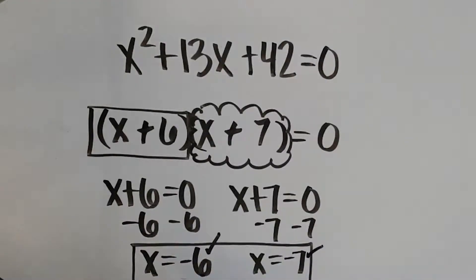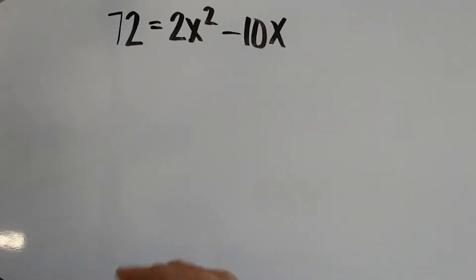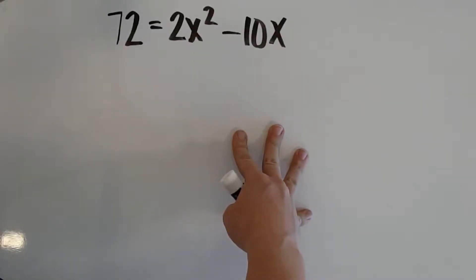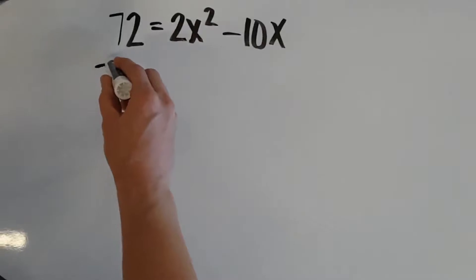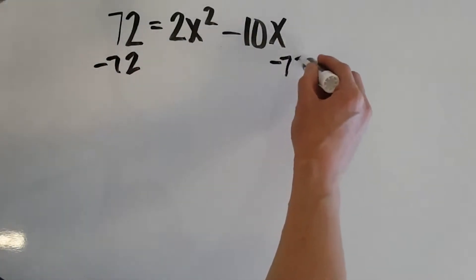So, now let's take a look at another example. We have 72 equals 2x squared minus 10x. Step 1 says we have to have our equation equal to 0 so that we can apply that zero product property. So, I like to be positive. I like to always keep this a value positive. So, I'm going to subtract 72 from both sides of our equation.